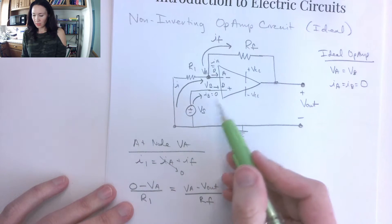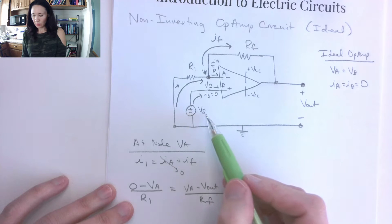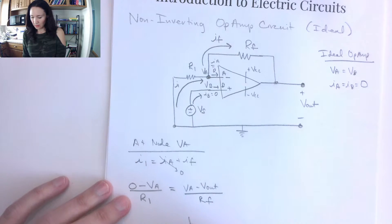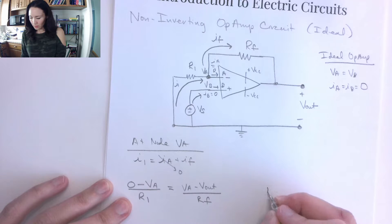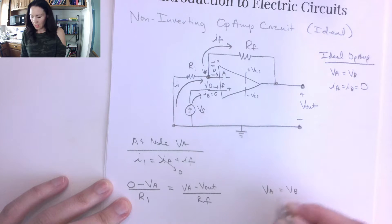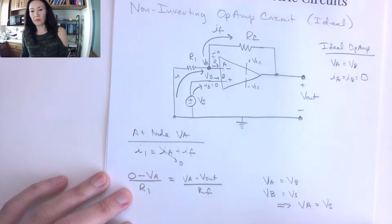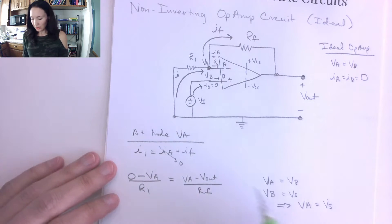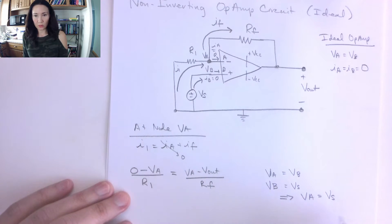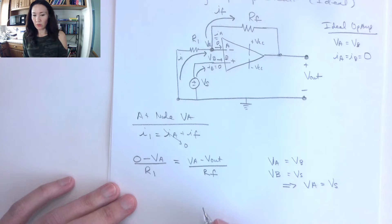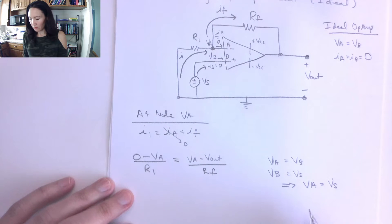The input voltage is connected directly to VB. By the ideal op-amp approximation, VA equals VB, and VB equals V source. So VA also equals V source. We can replace all the VAs in our equation with V source, which will give us V out in terms of V in.